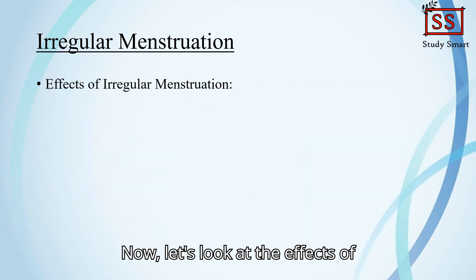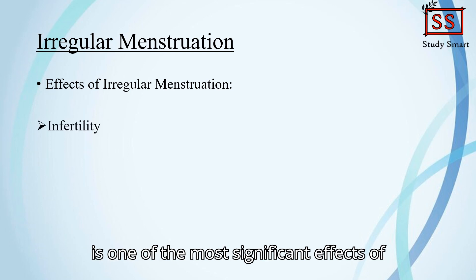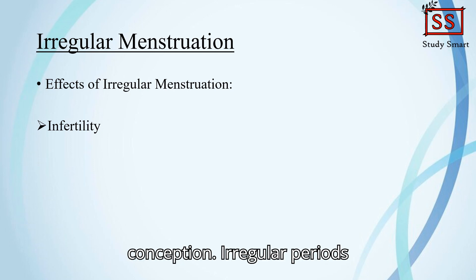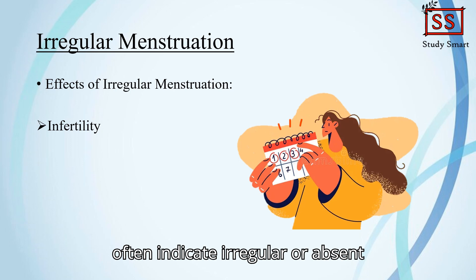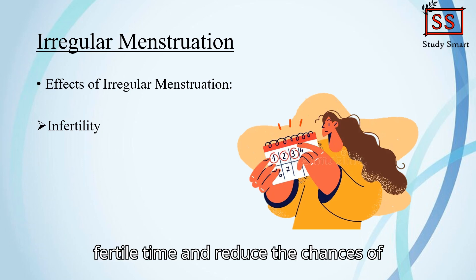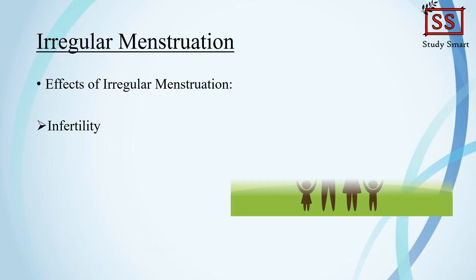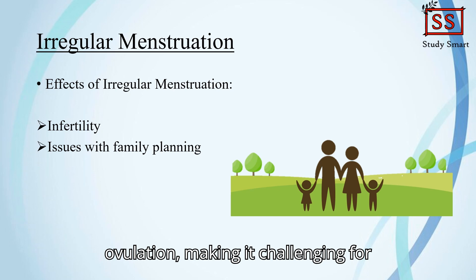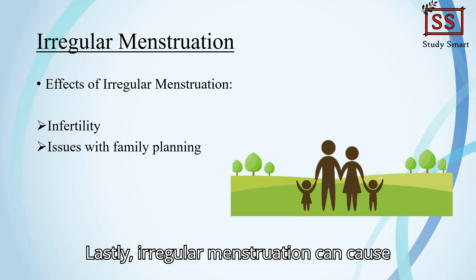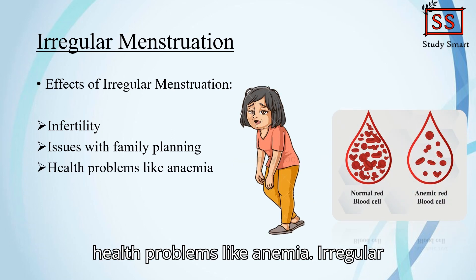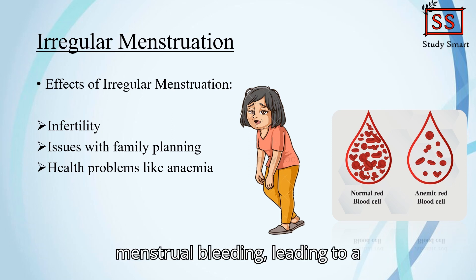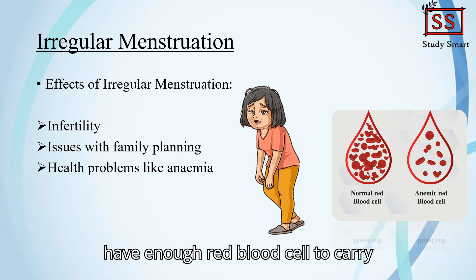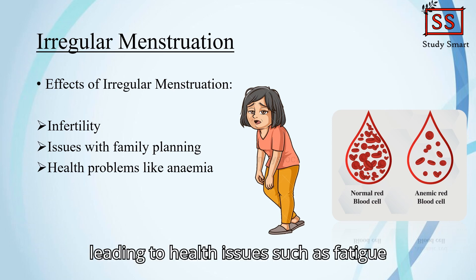Now let's look at the effects of irregular menstruation. Infertility is one of the most significant effects — regular menstrual cycles are typically a sign of regular ovulation, which is necessary for conception. Irregular periods often indicate irregular or absent ovulation, making it difficult to predict fertile times and reducing the chances of conception. Irregular menstruation can also complicate family planning efforts, as it becomes difficult to accurately predict ovulation for timely conception. Lastly, irregular menstruation can cause health problems like anemia. Heavy menstrual bleeding can lead to a significant loss of blood, resulting in anemia — when the body doesn't have enough red blood cells to carry sufficient oxygen to body tissues — leading to fatigue and shortness of breath.